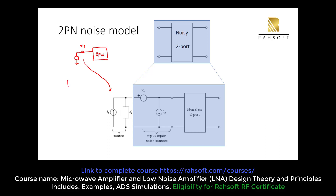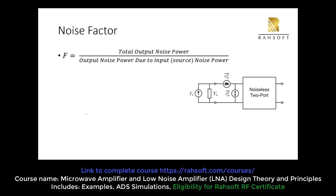We convert the Thevenin circuit to a Norton circuit. This is still ZS — if we have a current source IS, then IS equals V over R. If ZS equals RS, then IS equals VS over RS. We can also express this using admittance YS, where YS equals 1 over ZS. ZS can be real or complex impedance, and we are going to find the best value for ZS.